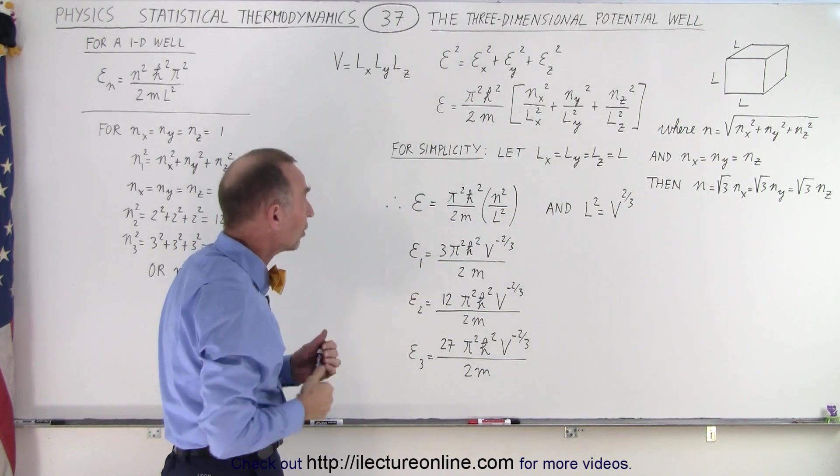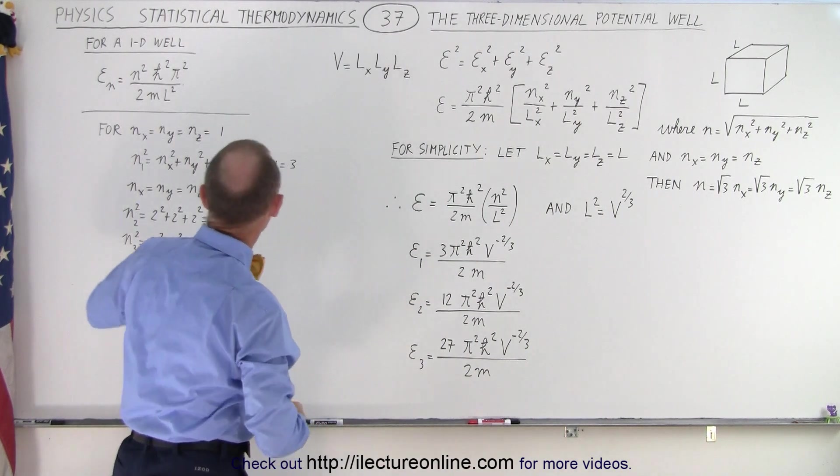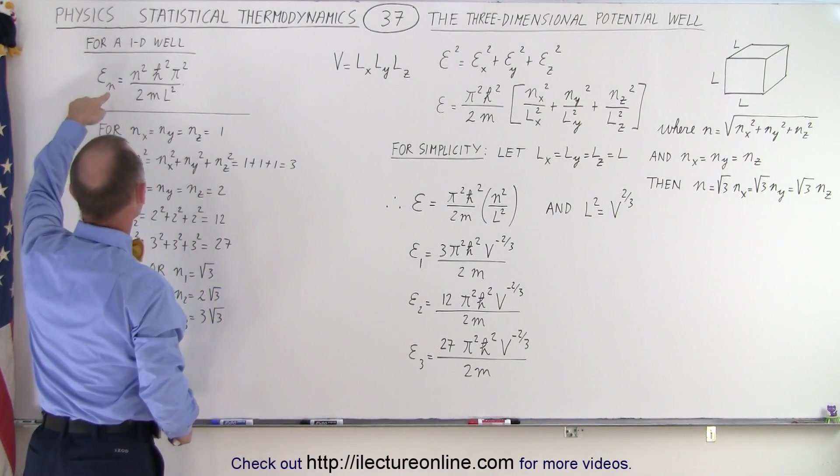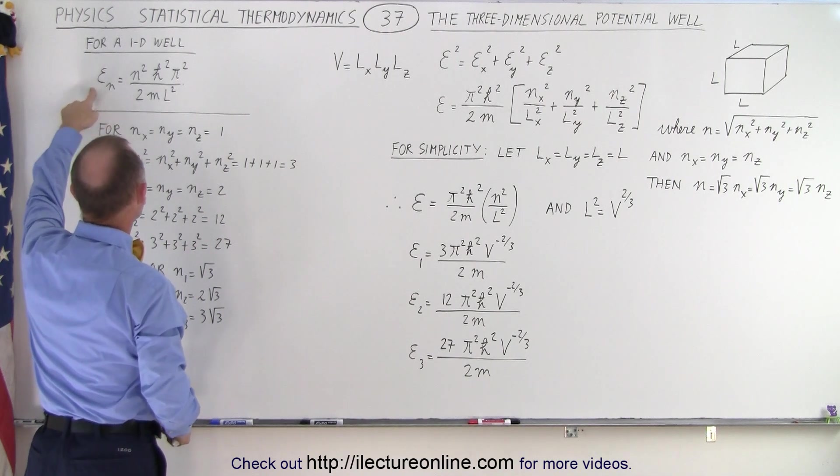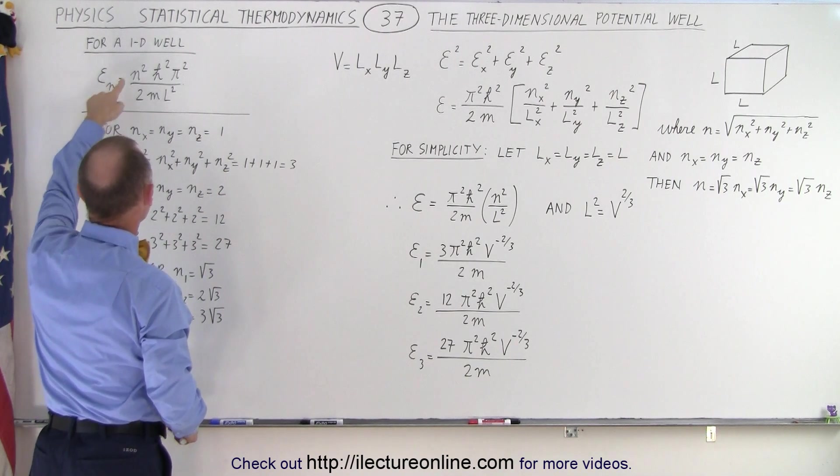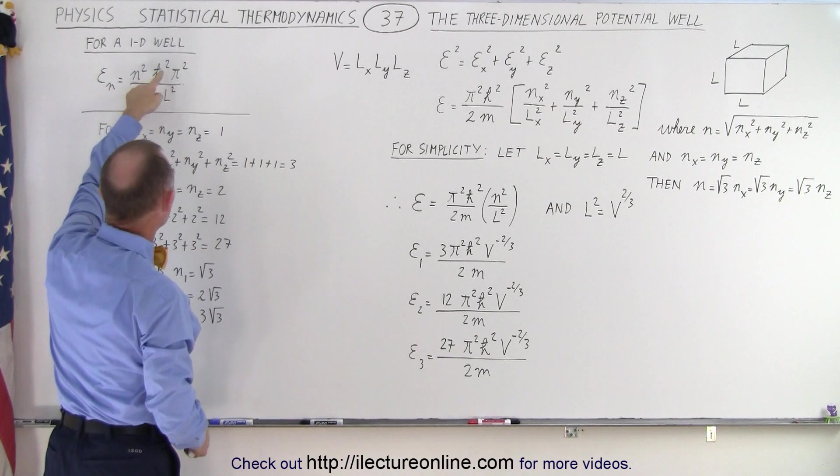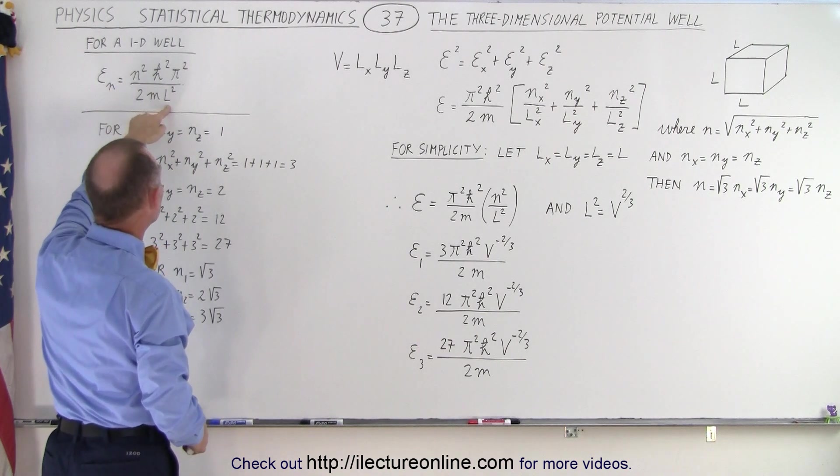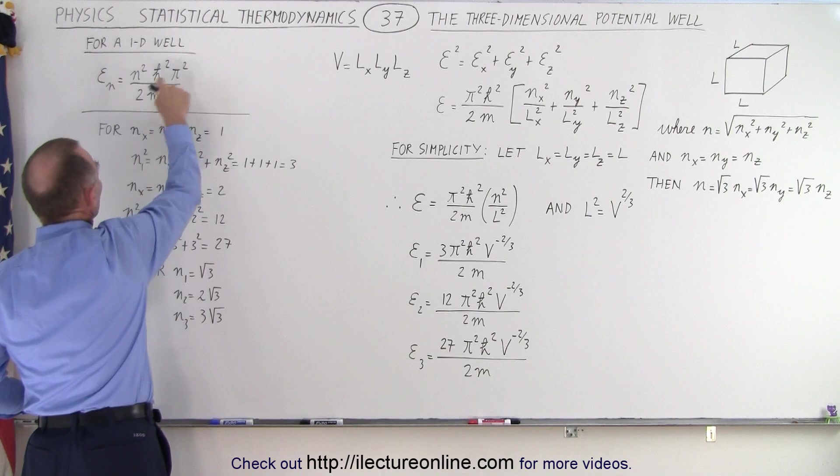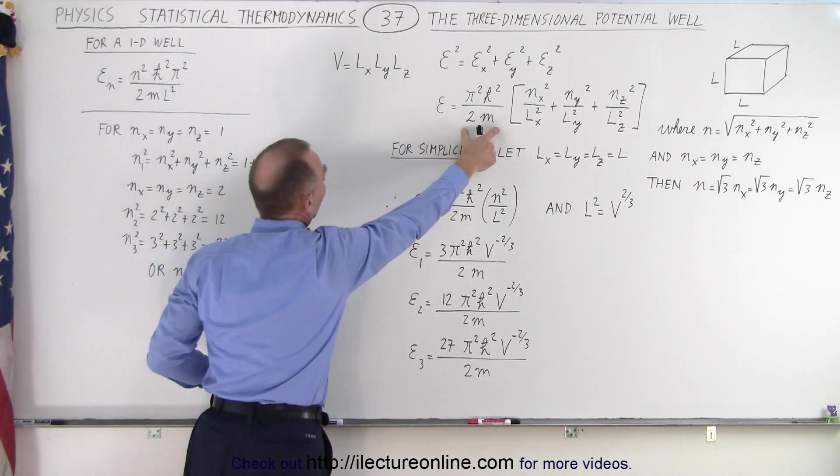a particle will move in the x, the y, and the z direction. So if we go back to the one-dimensional well and we realize that the E sub n, the energy for each energy level, was n squared times h-bar squared pi squared over 2m l squared. Notice that the h-bar squared pi squared over 2m, well, that will survive.